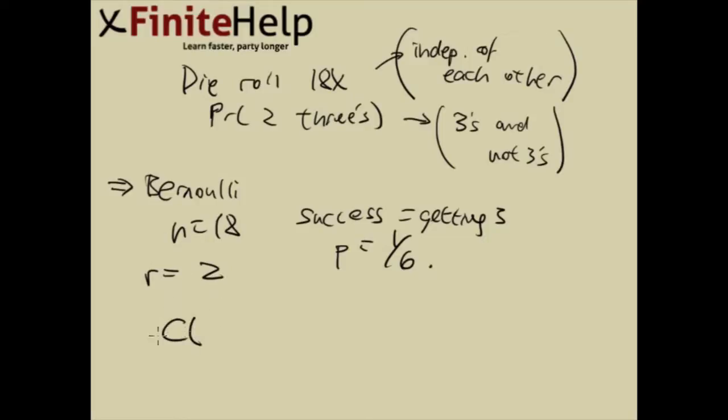It's going to be combination. We have number of trials, 18, choose number of successes, which is 2. And then we have the probability of success, which is 1/6, to the power of the number of times success, which is 2. And then we have to have the probability of failure, which is the complement of 1/6. That's going to be 5/6, to the power of the number of times failure, which is going to be 16. That's 2 from 18.